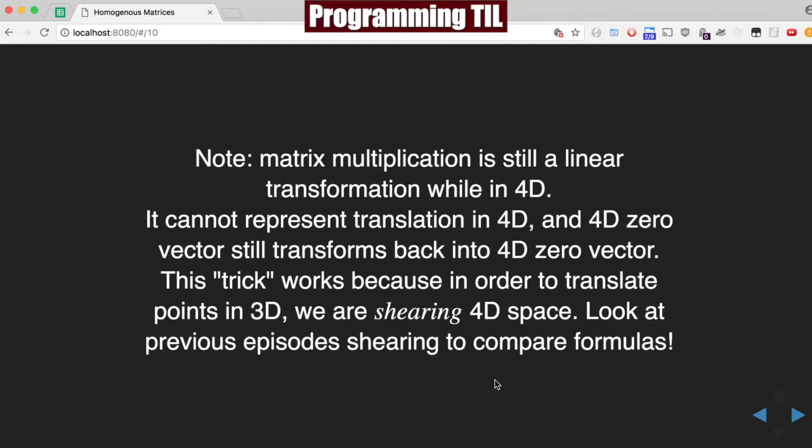And note that multiplication matrix is still a linear transformation, so we can't represent translation in 4D, and a 4D zero vector still transforms into a 4D zero vector. The trick works because we're going to be translating points in 3D, and we're shearing this 4D space. Look at the previous episode on shearing if you don't remember that.